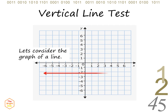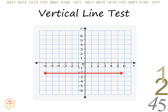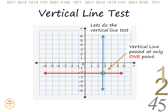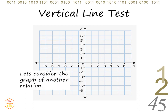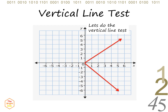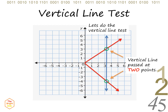For example, let's consider the graph of this straight line. Notice that when we draw the vertical line, it passes the straight line at only one point. There is just one point of intersection. Therefore, this relation is a function. In another example, consider the graph of this relation. Notice that when we draw the vertical line, there are two points of intersection. Since there are two points of intersection, this relation is not a function.